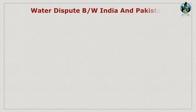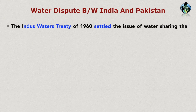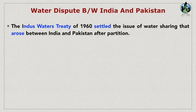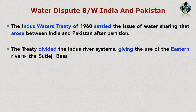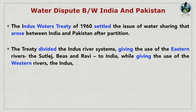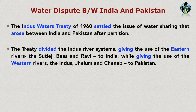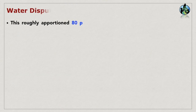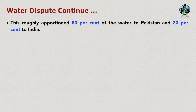Water dispute between India and Pakistan: The Indus Waters Treaty of 1960 settled the issue of water sharing that arose between India and Pakistan after partition. The treaty divided the Indus river systems, giving the use of the eastern rivers — the Sutlej, Beas, and Ravi — to India, while giving the use of the western rivers — the Indus, Jhelum, and Chenab — to Pakistan. This roughly apportioned 80% of the water to Pakistan and 20% to India.